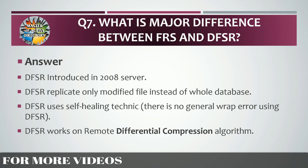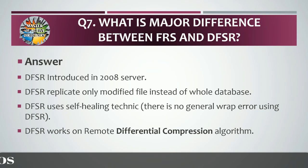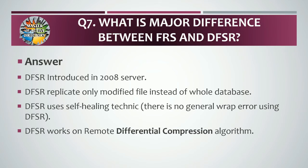Question number seven: what is the major difference between FRS and DFSR? Answer: DFSR was introduced in Windows Server 2008. DFSR replicates only the modified file instead of the full database. DFSR uses a self-healing technique, so there is no journal wrap error. DFSR works on the Remote Differential Compression algorithm.